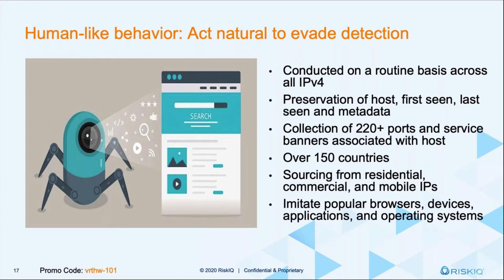For example, having the ability to simulate a mobile phone browser in the region in which it's being targeted means that the RiskIQ crawlers have a higher likelihood of observing the full exploitation chain. We're conducting this on a routine basis every day across all of IPv4. There's a preservation of hosts, first seen, last seen, and metadata, so we're able to capture all of that historical information and serve it up into Passive Total. We egress out against 150 different countries, and we have a collection of over 220 ports and service banners associated with the host.